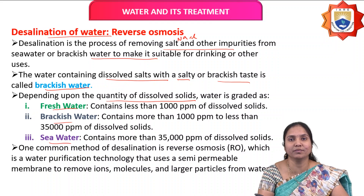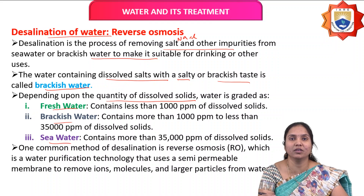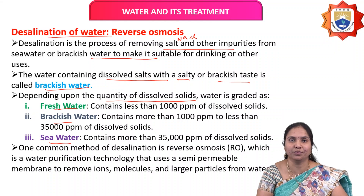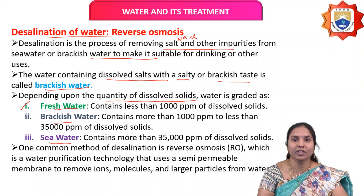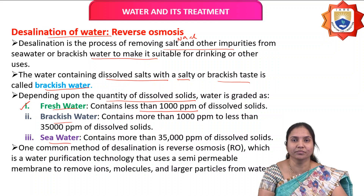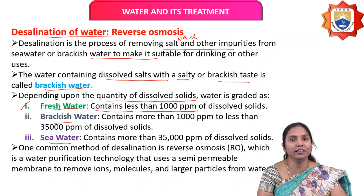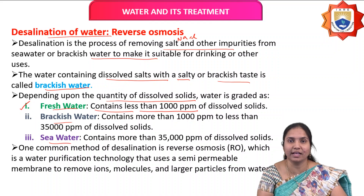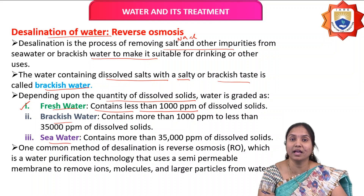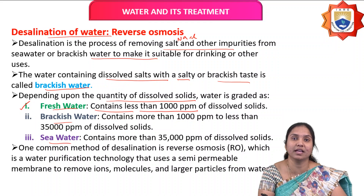Based on dissolved salts — such as hardness-causing salts, minerals, or other impurities present in water — water is classified into three types. Fresh water contains less than 1000 ppm of dissolved solids.